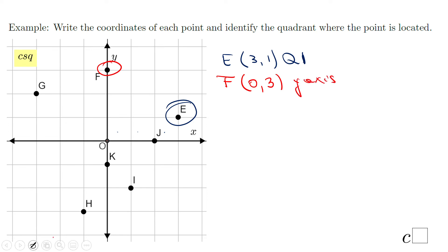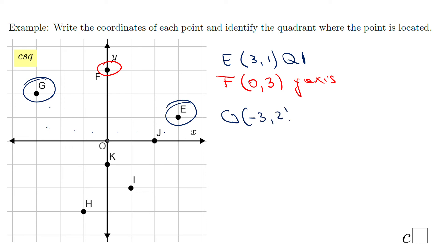Point G: from the origin, I move three left and two up. Three left means negative three, and two up means positive two. That is in quadrant two.